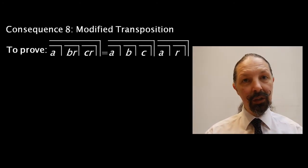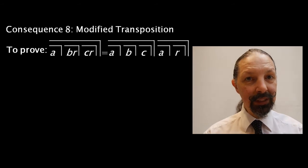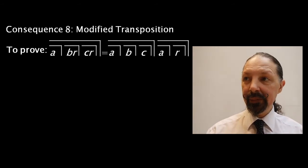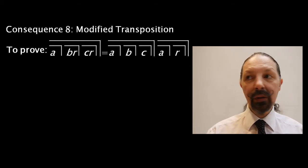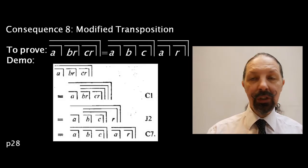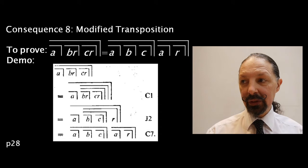These are longer than the consequences we've been looking at previously, so we'll go through them in a bit more detail. Our job is to prove consequence eight, which he calls modified transposition. The demonstration is quite short. Let's have a look at it.